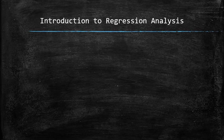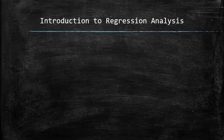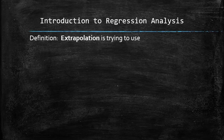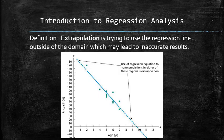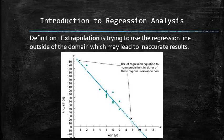We finish this section by introducing more terms. Extrapolation is trying to use the regression line outside of the domain, which may lead to inaccurate results. So technically, in our case, the x and y intercepts are the examples of extrapolation. Extrapolation may or may not make sense and it depends on the context.